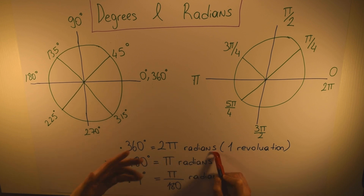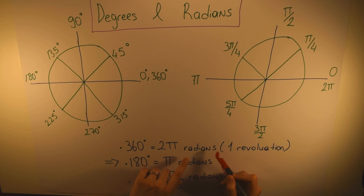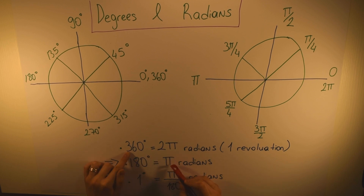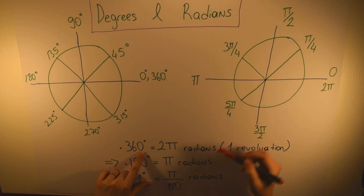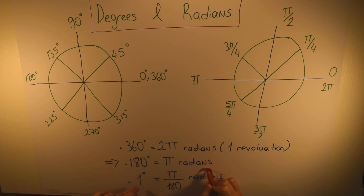You will see some problems about this — it will say convert this degree to radians or these radians to degrees. In those kinds of questions you will need these formulas. So 360 degrees equals 2π radians, which equals 1 revolution. This also means 180 degrees equals π radians, and 1 degree equals π/180 radians.